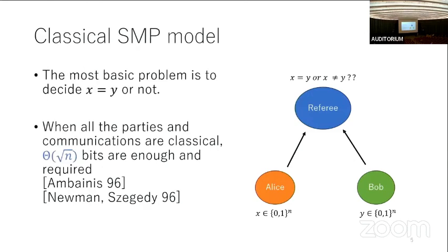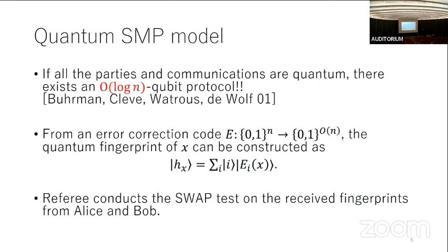The most basic function is the equality function. In the 1990s it was known that this problem is hard in the classical scheme. In 2001, Buhrman, Cleve, Watrous, and de Wolf discovered that if all the parties and communications are quantum, then there exists a very efficient protocol using O(log n) qubits.